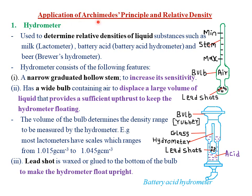Today we are looking at applications of Archimedes' principle and relative density. Our first application is in the hydrometer. A hydrometer is simply an instrument used to determine the relative density of various liquids — for example, milk. The hydrometer used to determine the relative density of milk is called a lactometer.